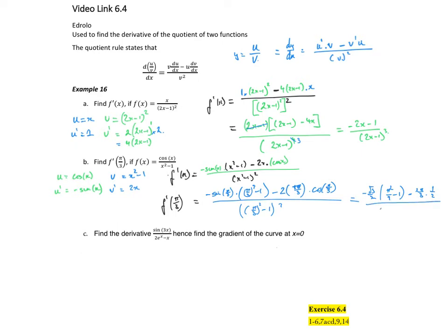Over (π²/9 - 1)². Probably not the best example in reality. But let's try and tidy it up a little bit.